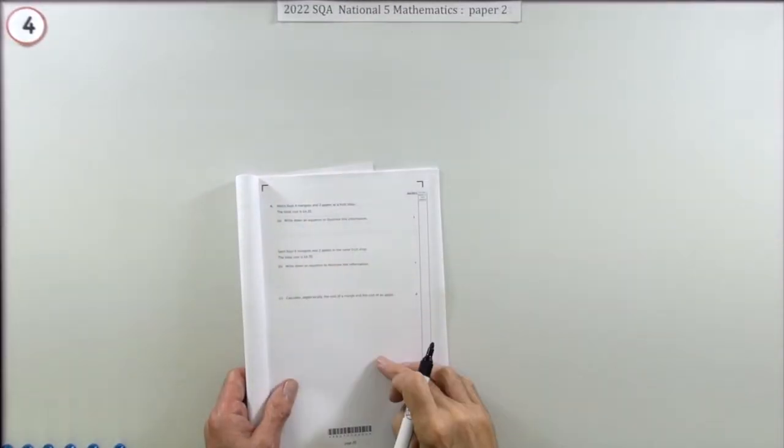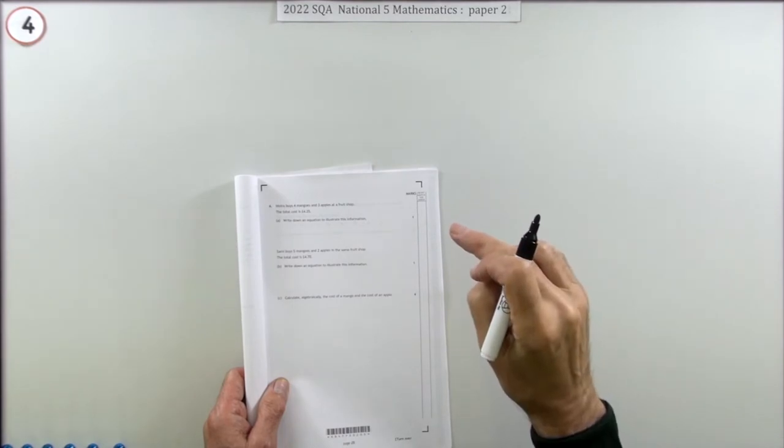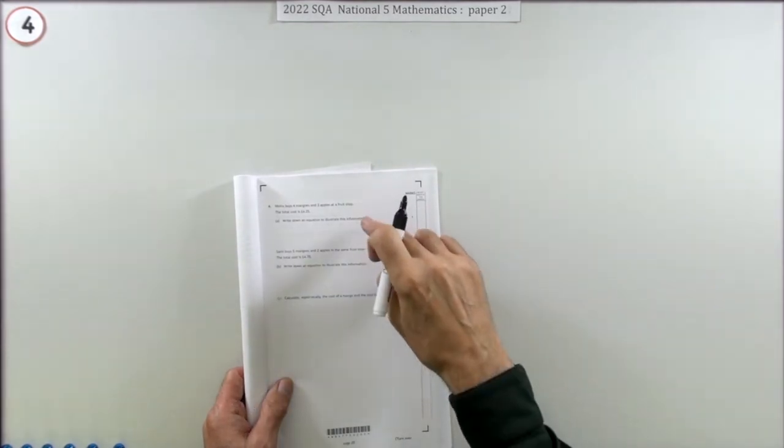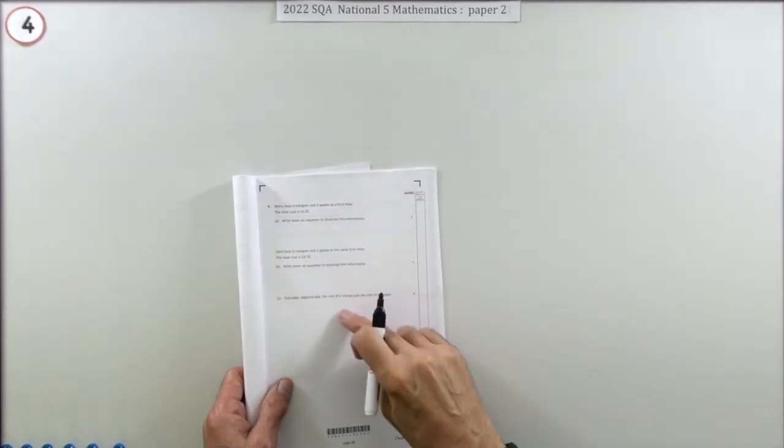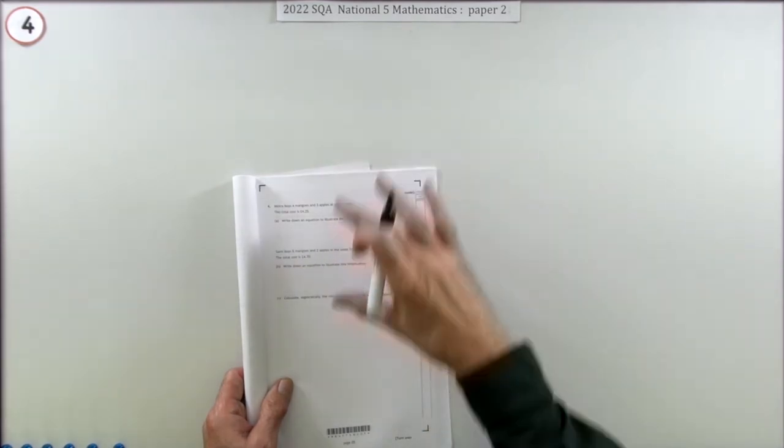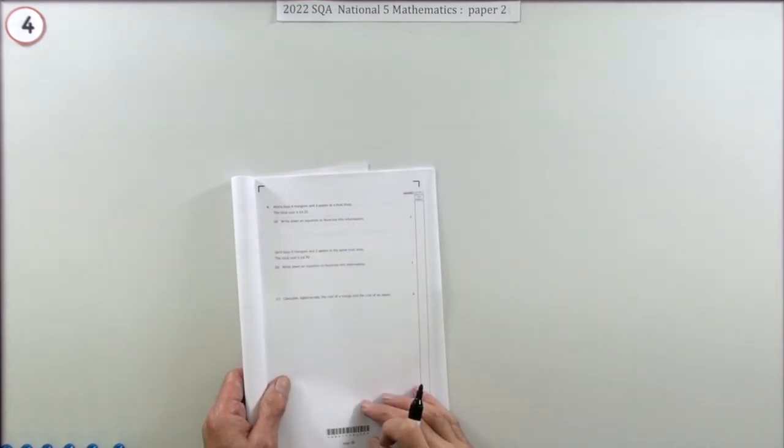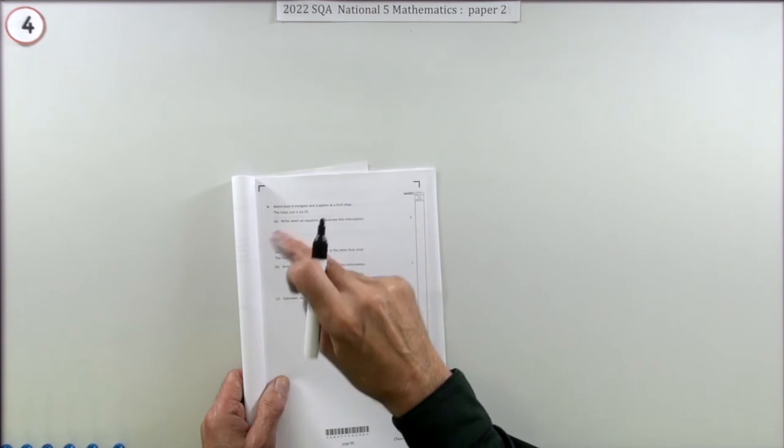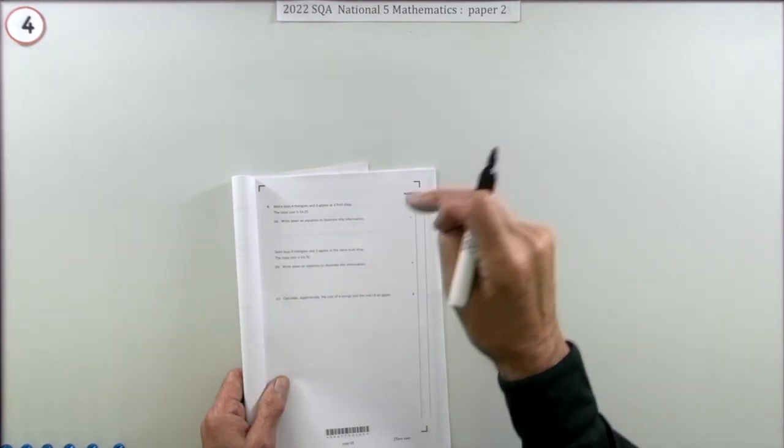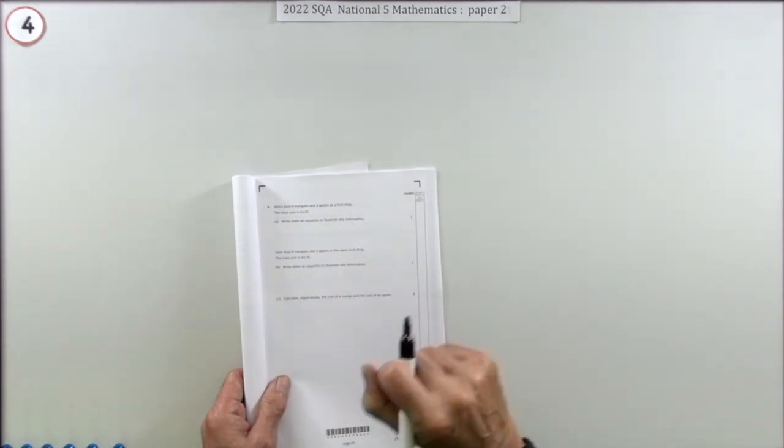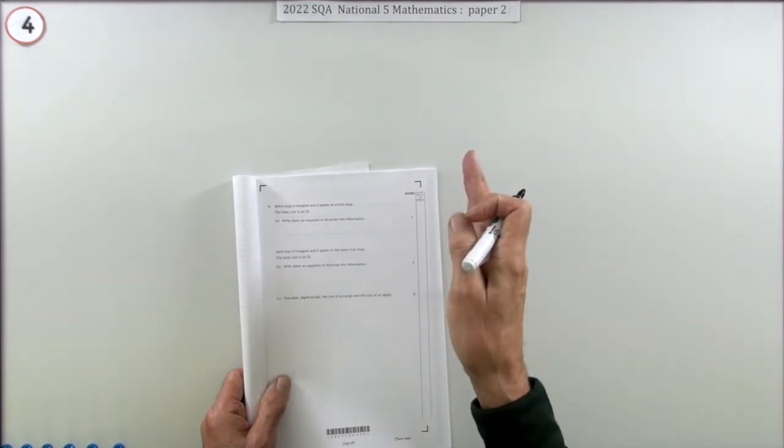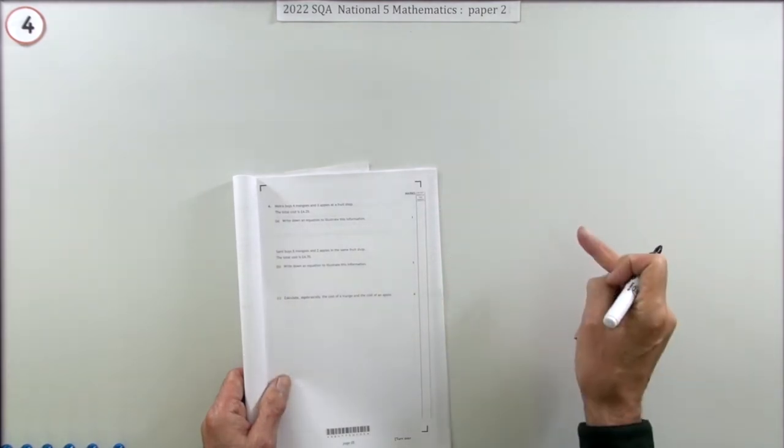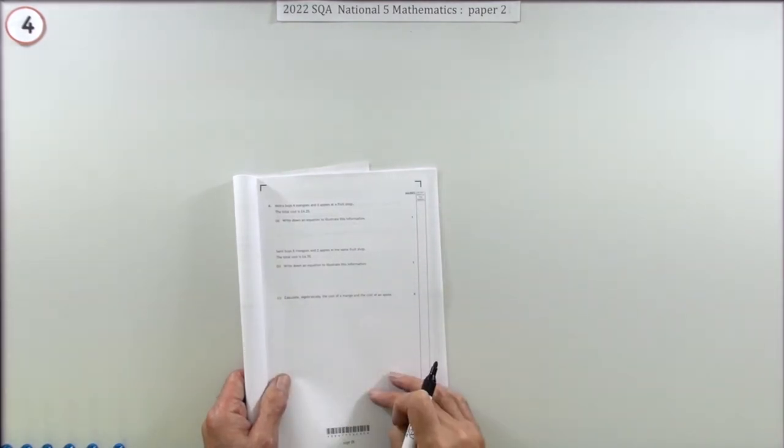Question four from the 2022 National 5 paper two, a six mark question. It's written down in three parts but it's really just one part. It's a simultaneous equation type question where you're going to use elimination. You're going to form two equations in two variables and then multiply them appropriately.